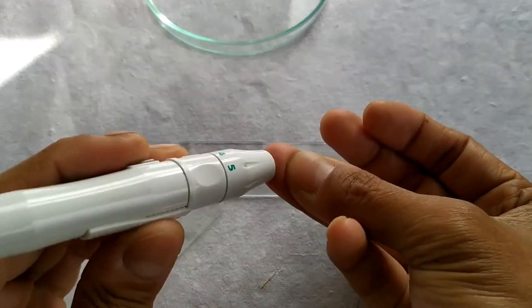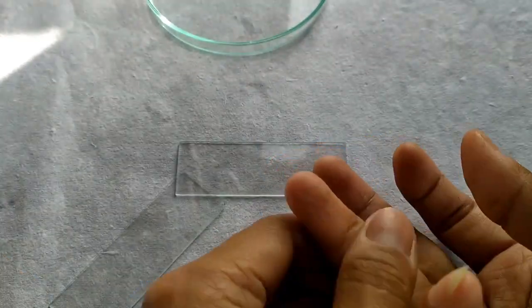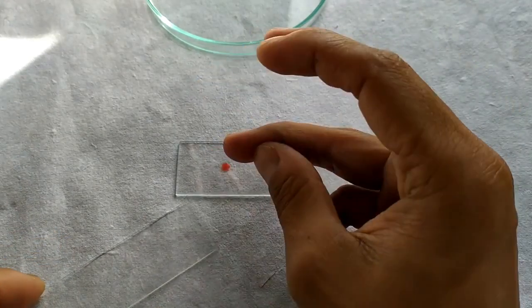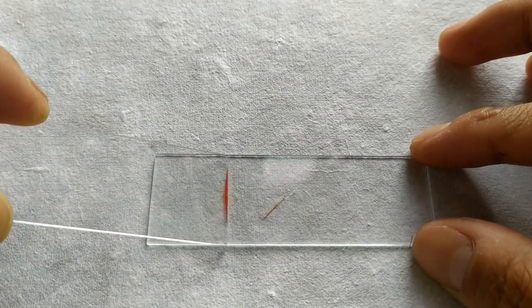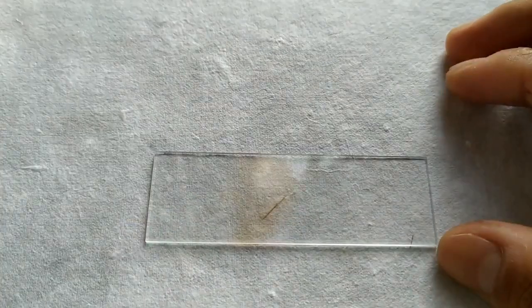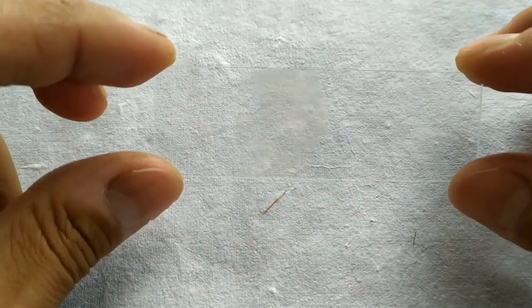In this experiment, we will be covering the procedure on how to prepare a thin blood smear and stain it with an appropriate stain for the morphological and quantitative study of the various cellular elements of blood. For this experiment, we will need the following.